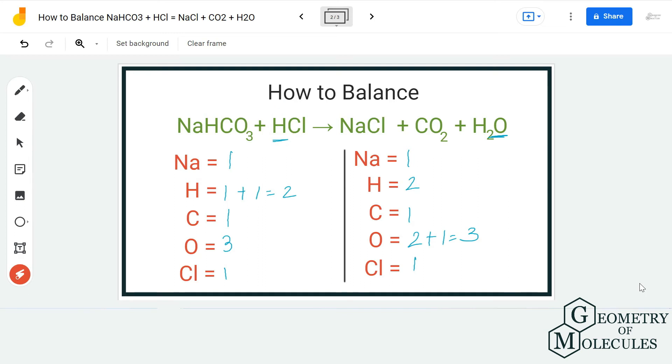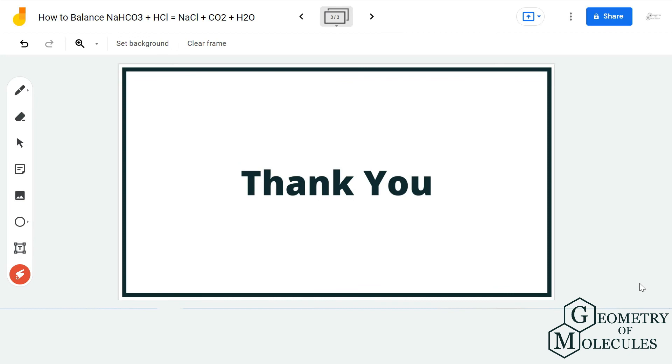So you do not need to add any coefficients. Make sure to count the number of hydrogen and oxygen atoms properly on both reactant and product side. I hope this video helps you to understand that. For more such videos on Lewis structure, molecular geometry, polarity of the molecules, make sure to subscribe to our channel and thanks for watching.